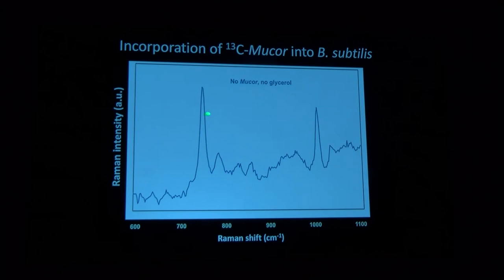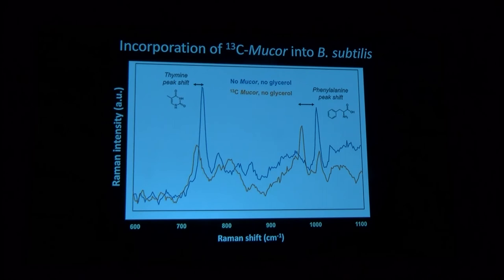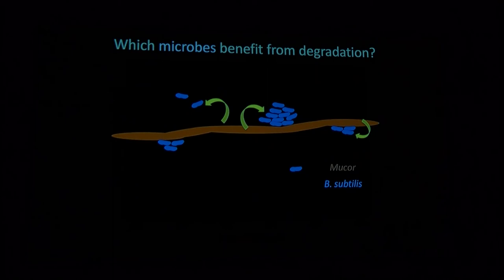What we did was we grew Bacillus subtilis just by itself with no mucor, and this is the Raman spectrum we get. If we grow it with a C13 labeled mucor, we can see really clearly that it's gotten its carbon from the mucor. So we see this really nice phenylalanine shift, and we know all of it is coming from the mucor because that's the only place it could have possibly gotten its carbon from. But now if we add a bunch of free sugar, this time in the form of glycerol, we see that the Bacillus actually didn't take up any of the carbon from the mucor. It looks basically the way it did when it was grown without any C13. So it's getting all of its nutrients from the glycerol. So this means we know that our isotopes are working. We can definitely detect the signal, and we can see the uptake in Bacillus subtilis, and we've used it to show that actually the presence of a free sugar will suppress decomposition.